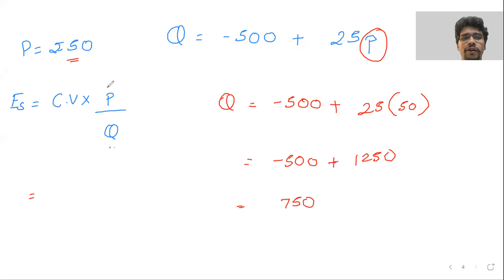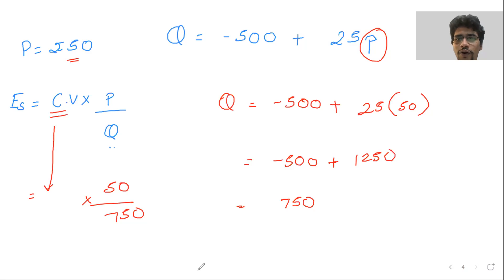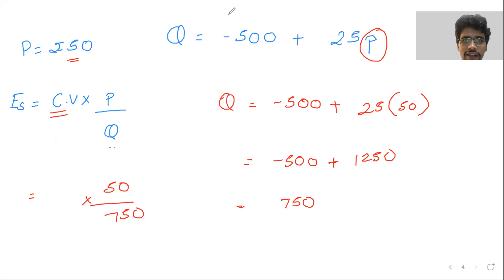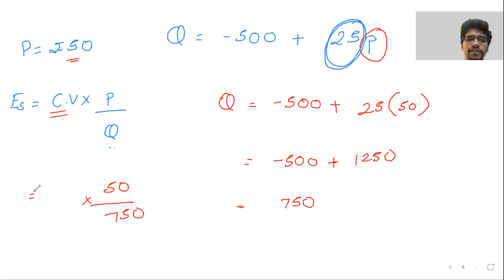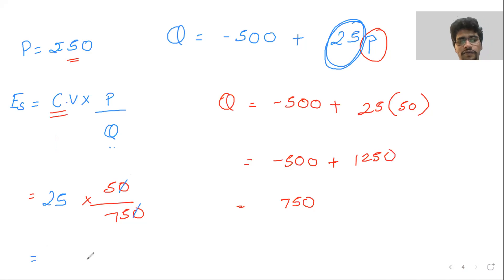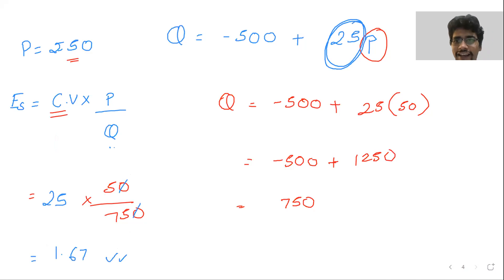Now, the coefficient variable — what is it? It is 25. Pick up the coefficient variable directly and put it in the formula. P is 50 and Q is 750. Solve: 25 into 50 upon 750. The answer is 1.67. Right answer! Simple.